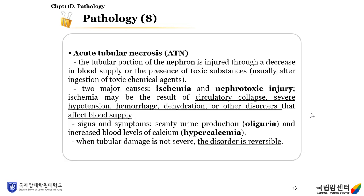Acute tubular necrosis (ATN): the tubular portion of the nephron is injured through a decrease in blood supply or the presence of toxic substances, usually after ingestion of toxic chemical agents. There are two major causes: ischemia and nephrotoxic injury. Ischemia may be the result of circulatory collapse, severe hypertension, hemorrhage, dehydration, or other disorders affecting blood supply. The signs and symptoms are scanty urine production (oliguria) and increased blood levels of calcium (hypercalcemia). When the tubular damage is not severe, the disorder is reversible.